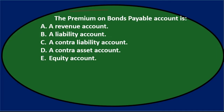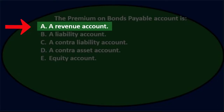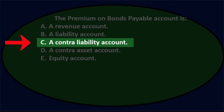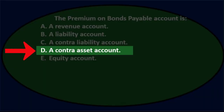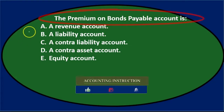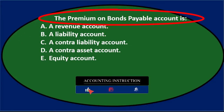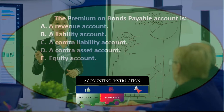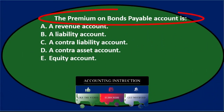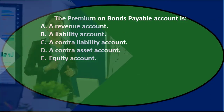First question: the premium on bond payable account is — a) a revenue account, b) a liability account, c) a contra liability account, d) a contra asset account, or e) an equity account. Using the process of elimination, first we might want to get an idea of what a premium is. If we can think of the journal entry that creates the premium, that would be the easiest approach.